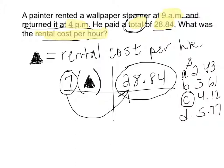Step two: decide what is your pawn — what is it that you don't know? Usually that question comes at the end. In this case, your pawn is your rental cost per hour. Once you know that, take a look: have they given you your total, or are you looking for your total? Your equation has to be balanced, so your total goes on one side and everything else on the other. In this case, they've given us our total, so we put it here.